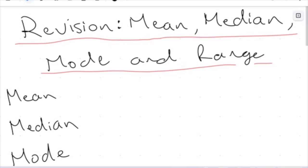Hey guys, welcome to a revision video. The topics we're covering today — mean, median, mode, and range — I've talked about at length in the year seven statistics video. Because these are such important concepts that you're going to be looking at pretty much all through statistics in school, I want to do an extra video to keep you thinking about these and conditioning you to remember them, since you're going to be building on these four concepts a lot in future years.